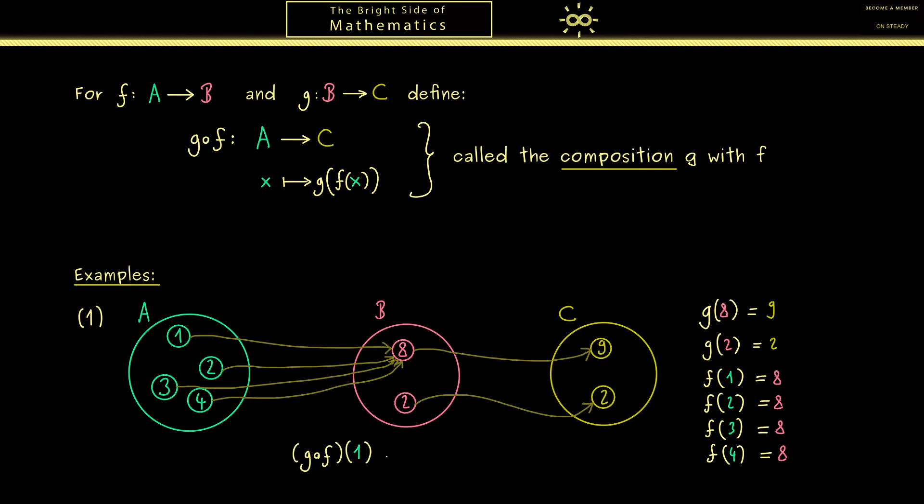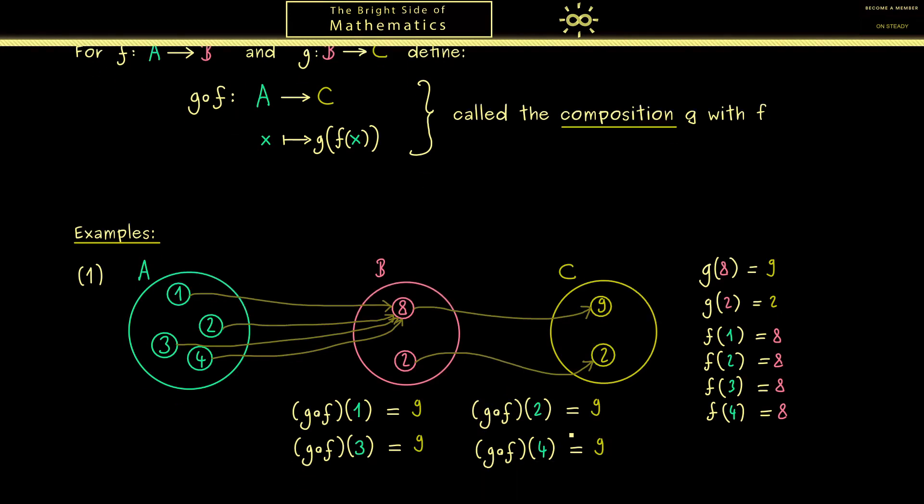Now the question is what is the composition G after F. For example what comes out when we put in the element 1. We already know we start with F which means from 1 we go to 8 and then we arrive at 9 after applying G. Of course also for the other inputs we land at 9 in the end.